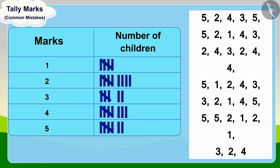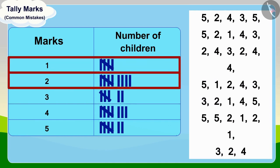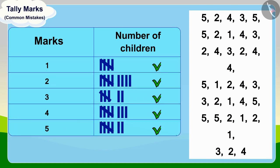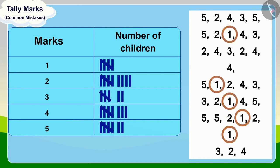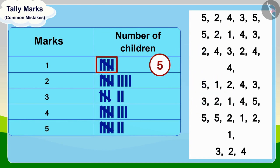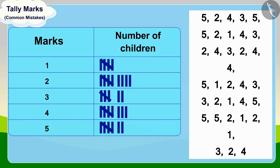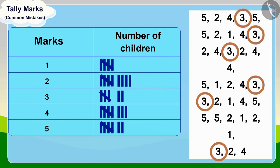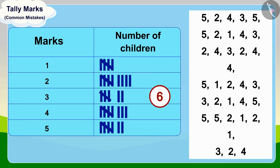Then she thought of a solution and decided to check the tally marks of each score once again. Children, can you find out how many tally marks should be there for one mark? One group of tally marks and four lines. And how many tally marks should there be for three marks? Yes, one group of tally marks and one line.